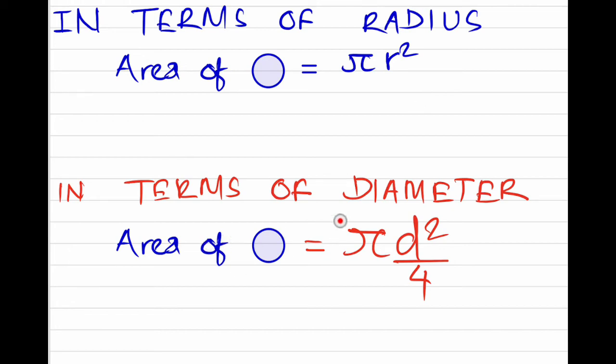But when given in terms of diameter, the area can be calculated as πd²/4, since the radius is half the diameter.